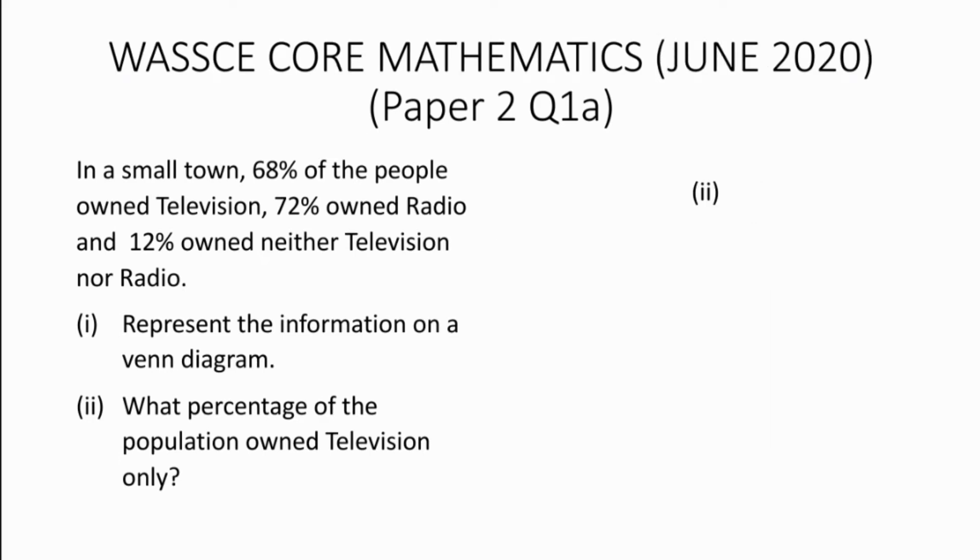Part ii is asking us to find the percentage of the population that owned television only. So our first step will be to find the percentage of the population that owned both television and radio.